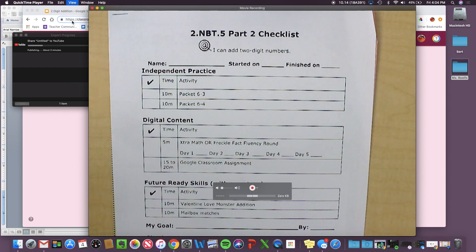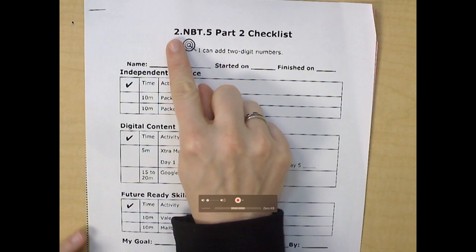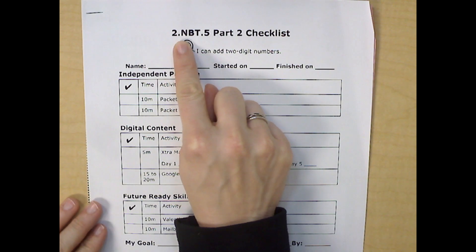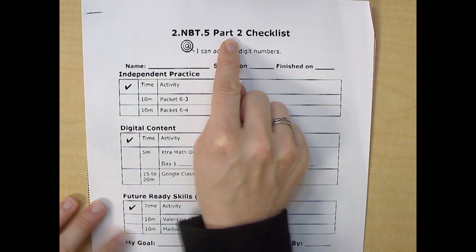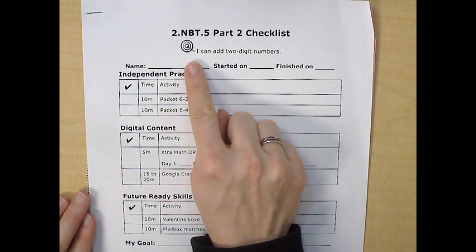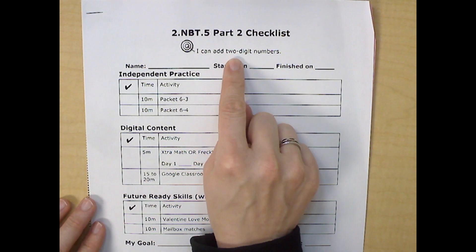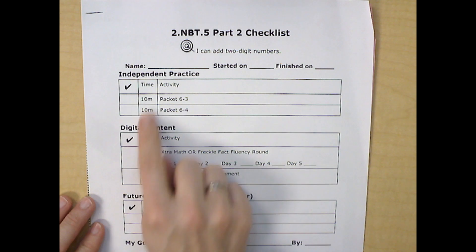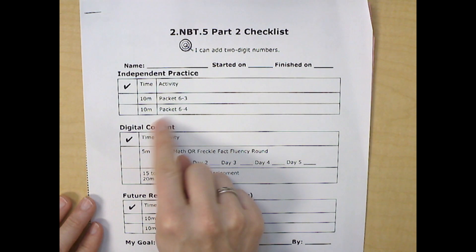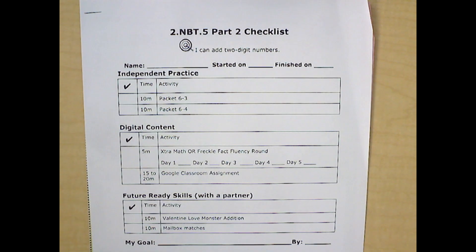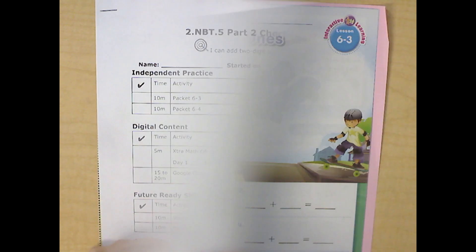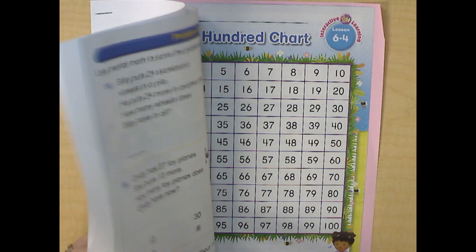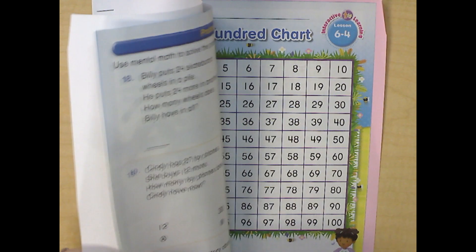All right, second graders, I'm going to explain how to work through Checklist 2.NBT.5 Part 2. The learning target for this checklist is I can add two-digit numbers. Your independent work is Packet 6-3 and Packet 6-4. You're going to notice that these might be a little bit easier today.